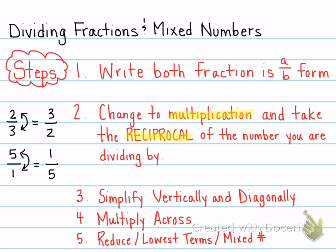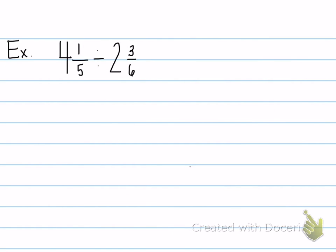Let's try an example. Let's try 4 1/5 divided by 2 3/6. Step 1 says to put them in A over B form. So 5 times 4 is 20 plus 1 is 21.